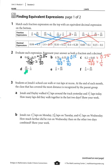Part d: 40 hundredths minus 1 tenth. I know that 1 tenth is the same as 10 hundredths, so 40 hundredths minus 10 hundredths equals 30 hundredths. As a decimal, 30 hundredths looks like 0.30.